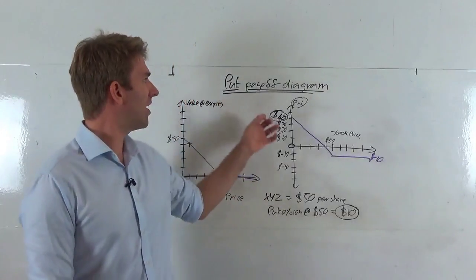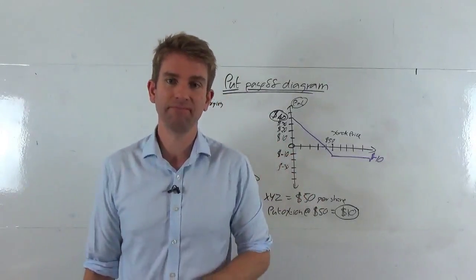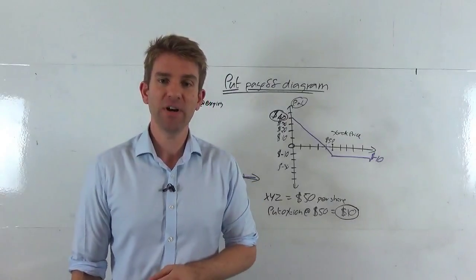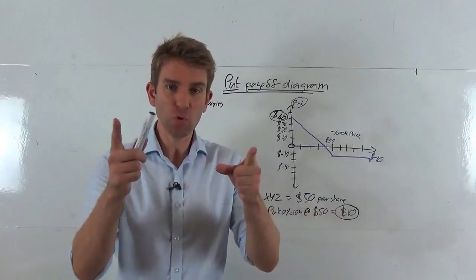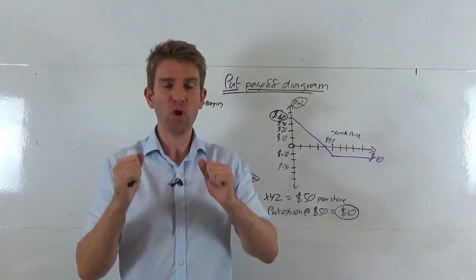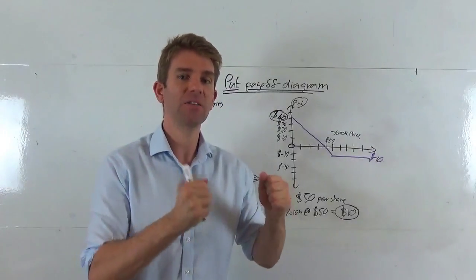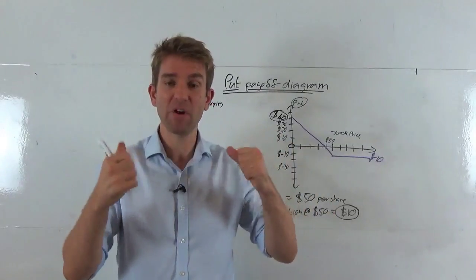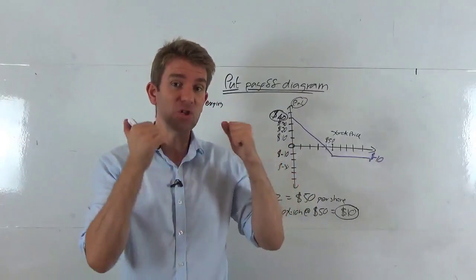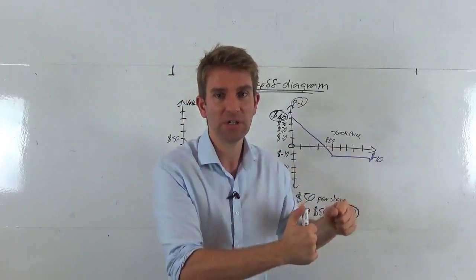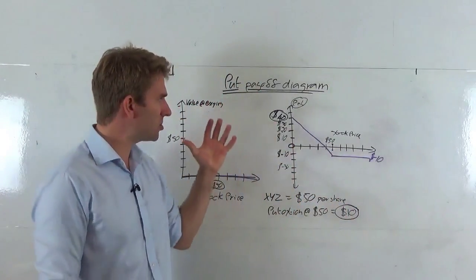In this video we're going to look at the payoff diagram for put options. Put options, as a reminder, is the right but not the obligation to sell a specific underlying asset — most of the time a stock, commodity, futures contract, or whatever it may be — at a specific strike price at a specific point in time in the future.